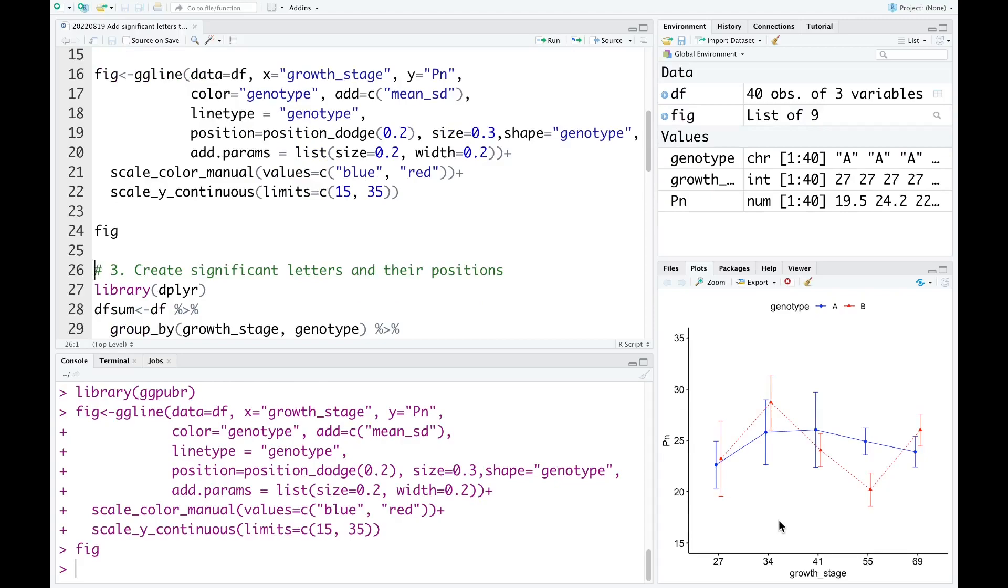This is the line graph. When I perform the pairwise analysis to compare the photosynthesis rate between two wheat genotypes at different growth stages, I found out that at this growth stage there was significant difference between two genotypes, but not at the other growth stages. And I want to show the significant differences for this line graph. How I can do that? I'm going to show you now.